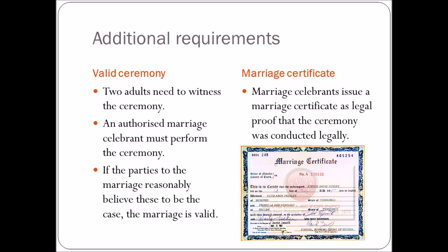The last requirement is a marriage certificate — you need to document it. An example shown is Elvis Presley's marriage certificate when he married Priscilla Presley. Today people go to Las Vegas and get married by Elvis impersonators, but you do need all of those requirements to be legally married in Australia. You can get married by an Elvis impersonator, as long as they're an authorised marriage celebrant and you gave them 30 days' notice.